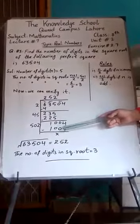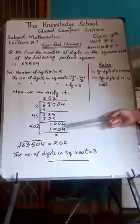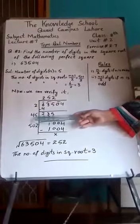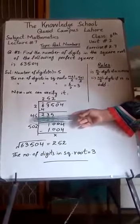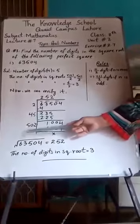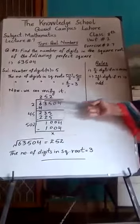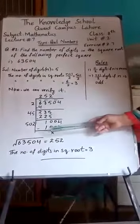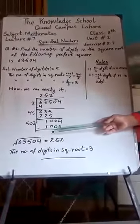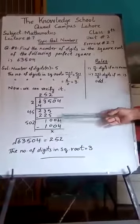And 04, hama copy karenge niche, yeh 1004 ho jaega. Ab is 45 meh, unit place per 5 where, so we will add 5 in 45, it is equal to 50. Ab 2 ko uper bhi mention karing, ya bhi 502 kore 2 se bati karenge, answer will be 1004. Subtraction will be 0.